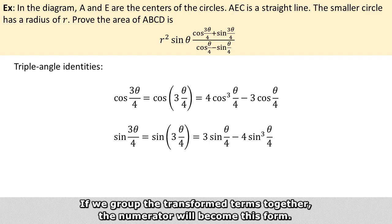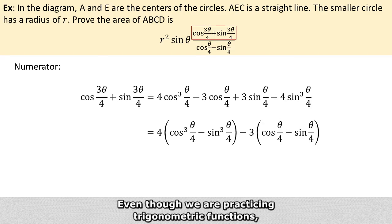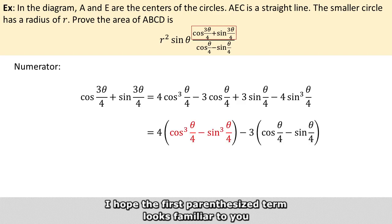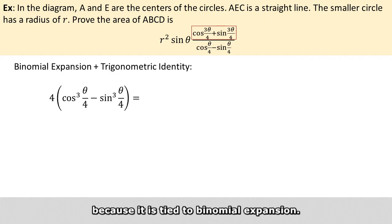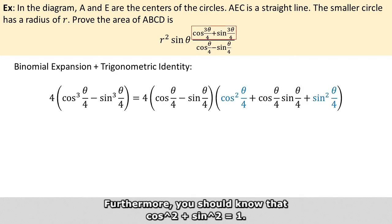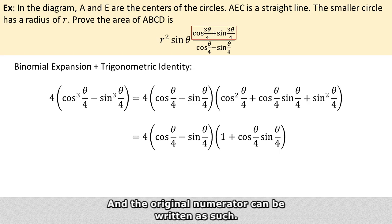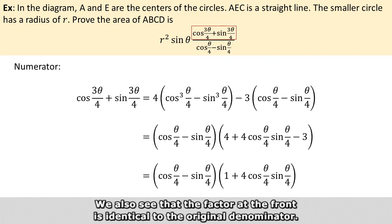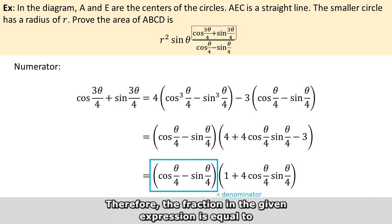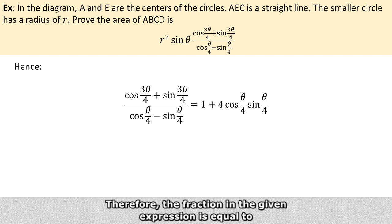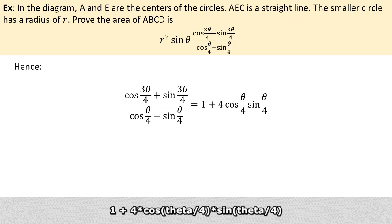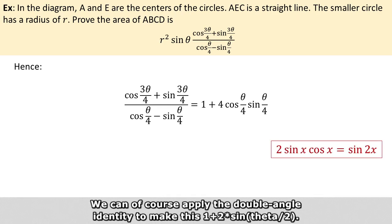If we group the transformed terms together, the numerator will take a new form. The first parenthesized term is tied to binomial expansion, and we can factor it into such a form. We also know that cosine squared plus sine squared of the same angle equals 1, so the right-hand side boils down accordingly. The original numerator can then be written in simplified form, and the factor at the front is identical to the original denominator, so they cancel out. Therefore, the fraction in the given expression is equal to 1 plus 4 times sine(theta over 4) times cosine(theta over 4). Applying the double angle identity makes this 1 plus 2 times sine(theta over 2), which is exactly what we set out to prove.